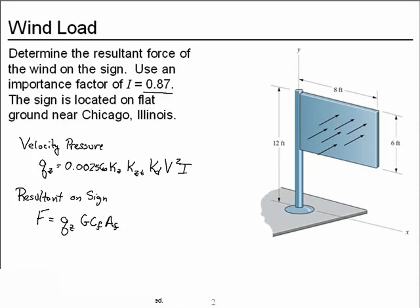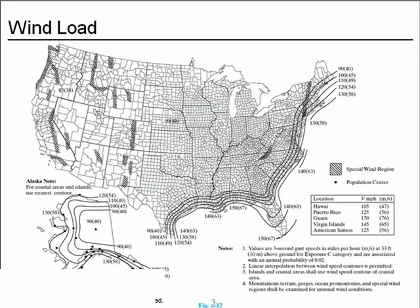To find the velocity pressure, we need to know the peak velocity for wind near Chicago, Illinois. So to do that, let's go to figure 1-12 from the textbook.